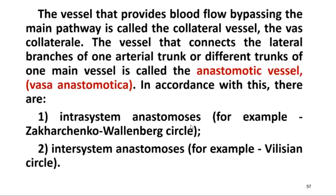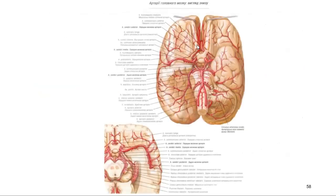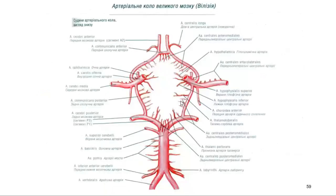There are intrasystemic anastomoses within one system — for example, the Harschen-Wallenberg cycle — and intersystemic anastomoses — for example, the circle of Willis. The circle of Willis connects the anterior cerebral artery, middle cerebral artery, and posterior cerebral artery, with posterior communicating and anterior communicating arteries between these vessels, providing important vascularization of the hypophysis.